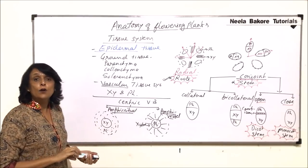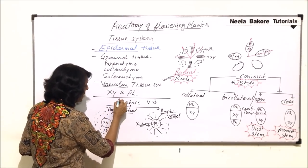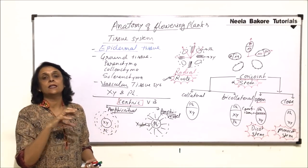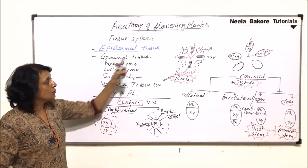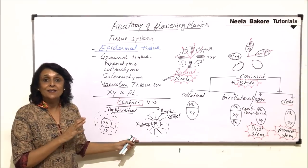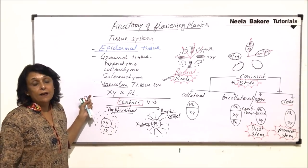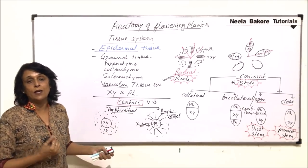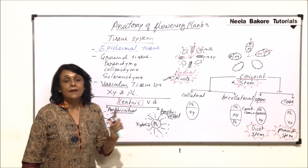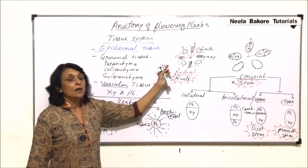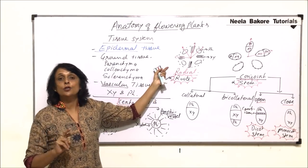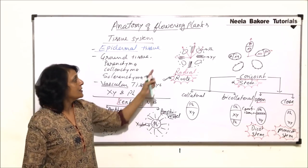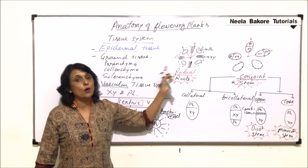Amphivasal and amphicribral come in the category of centric vascular bundles — one type of vascular tissue is in the center and the other completely surrounds it from all sides. Xylem and phloem are both compound tissues, meaning there are different types of cells which help in transport of substances. Xylem helps in transport of water and phloem helps in transport of food.